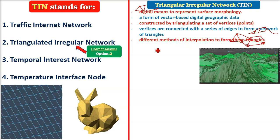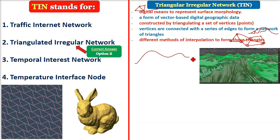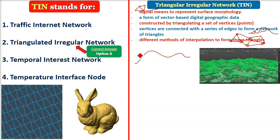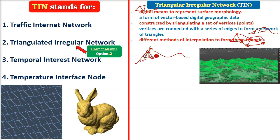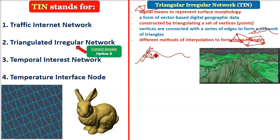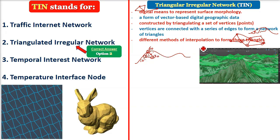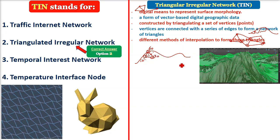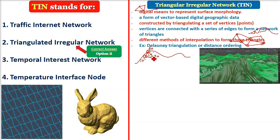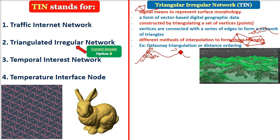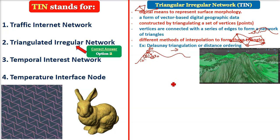The methods of making TIN can involve interpolation in forming the triangles. In a mountain you can have 60-meter or 30-meter intervals, so interpolation determines the values between points. This can be done using Delaunay triangulation and distance ordering.